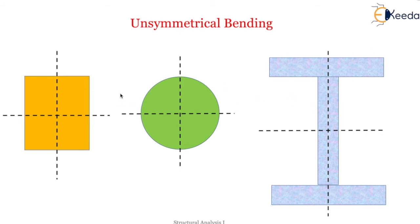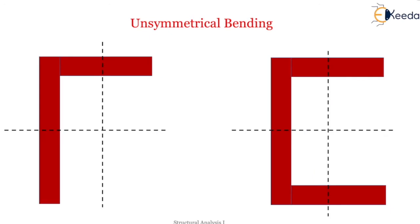Every section is not symmetrical about both centroidal axes. Some sections are symmetrical about only one axis, as you can see in this particular section. Whereas many sections, like angle sections, are not symmetrical about either centroidal axis, as you can see here — it is not symmetrical about both centroidal axes.